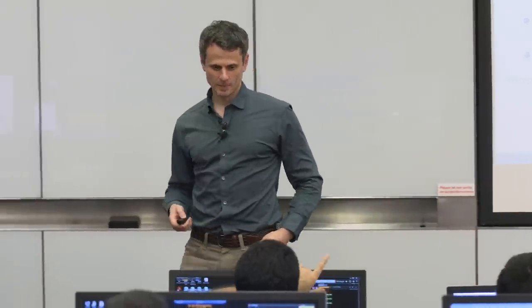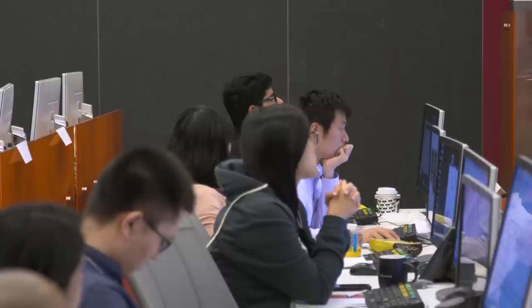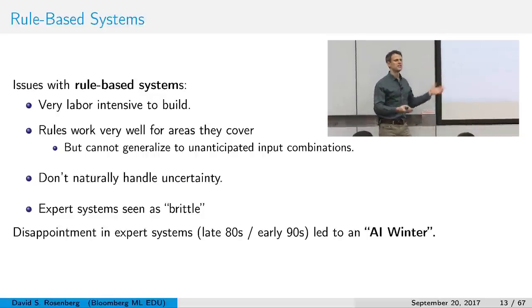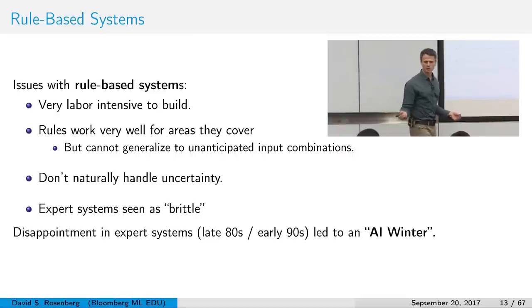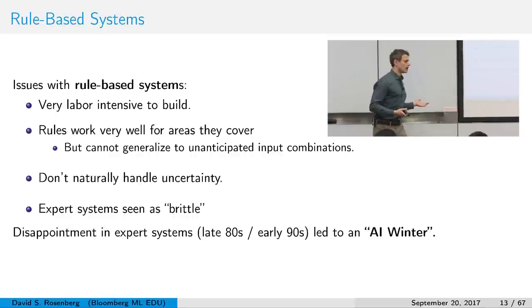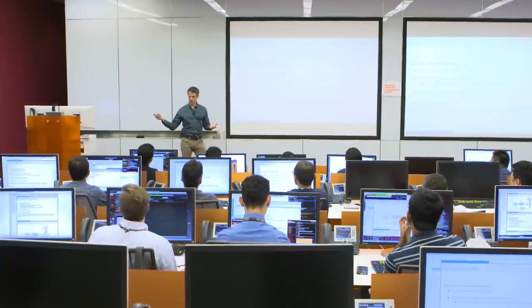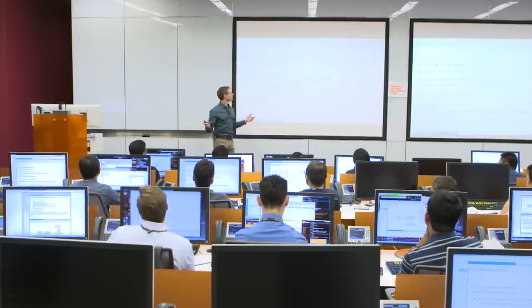A student raises that machine learning systems also struggle with unseen situations — for instance, in financial markets where every day is different. Machine learning systems tend to generalize better to unforeseen situations than rules. Moreover, if things change in the world, it's a different process to adjust a machine learning system than to adjust rules — you update training data rather than manually rewriting rules.